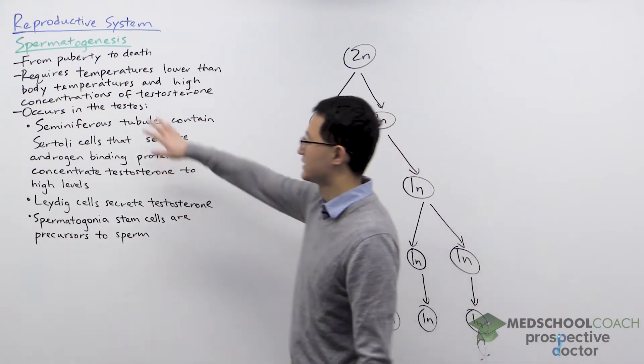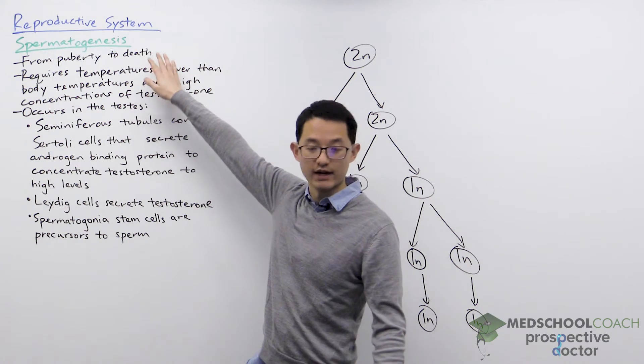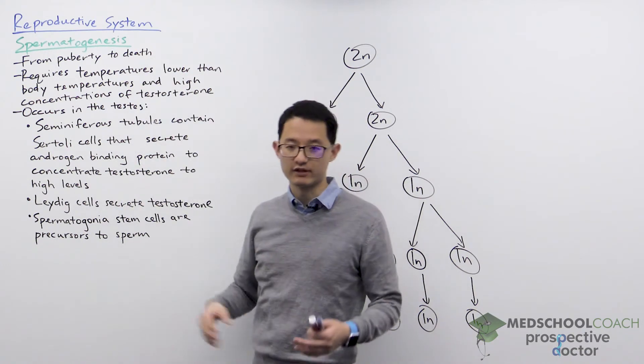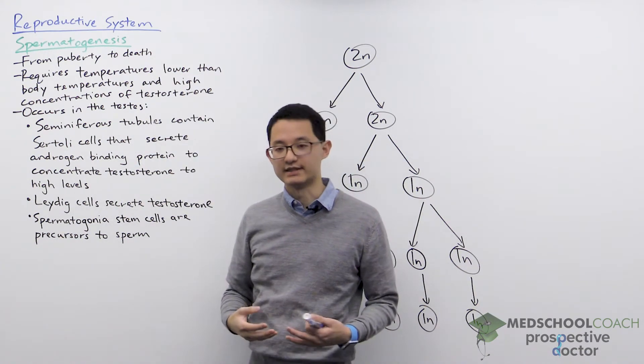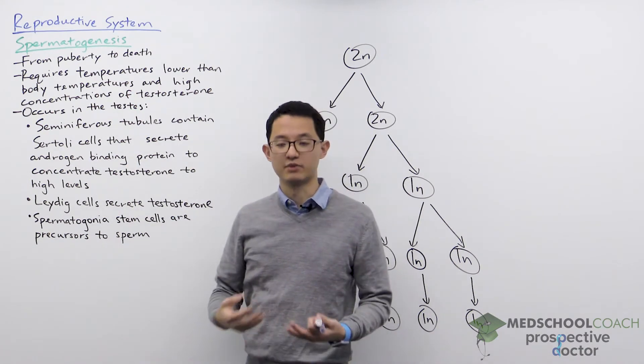This process starts at puberty and continues until the male dies. This is different from females where the female process is much more limited and does not happen continuously from puberty to death.